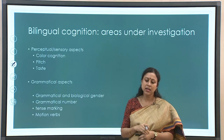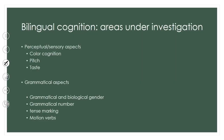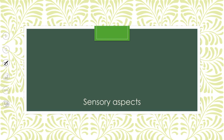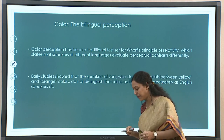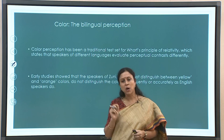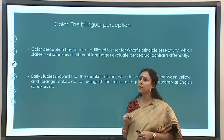The studies that followed looked at many different domains within bilingual cognition. These studies can be divided into two categories: one looking at the perceptual and sensory aspect — the kind of sensory input we get from the world and how that is coded in language — and another looking at grammatical and syntactic structural differences. Let us go to the perceptual and sensory aspects first.